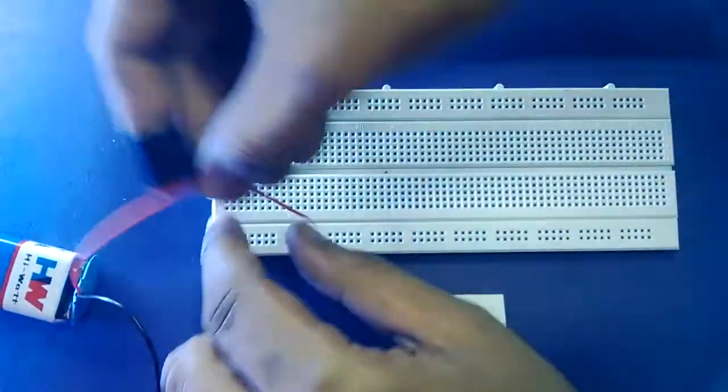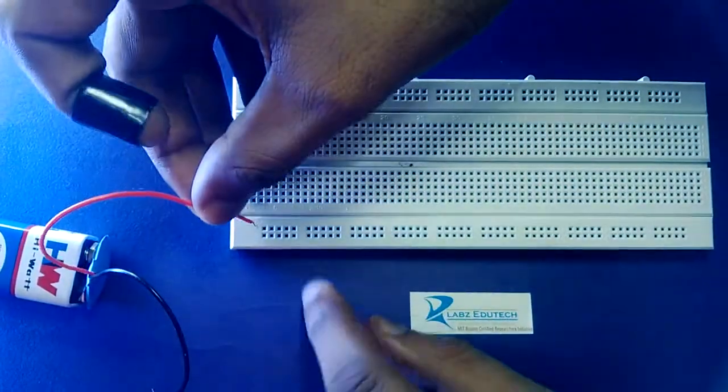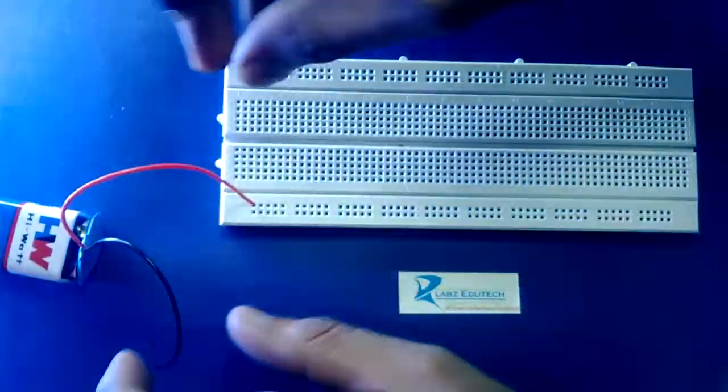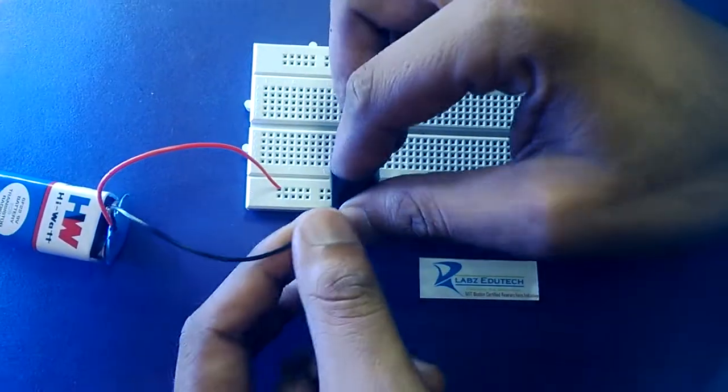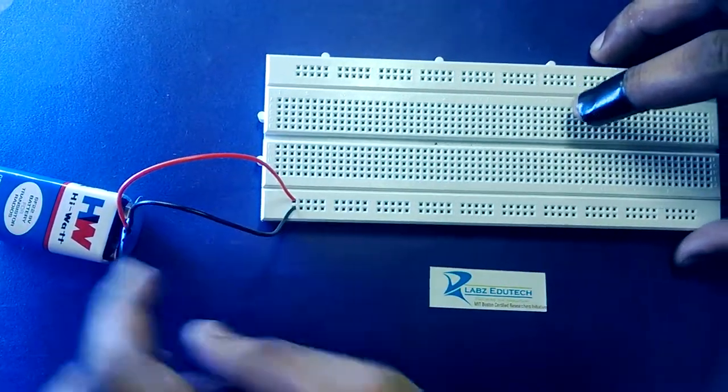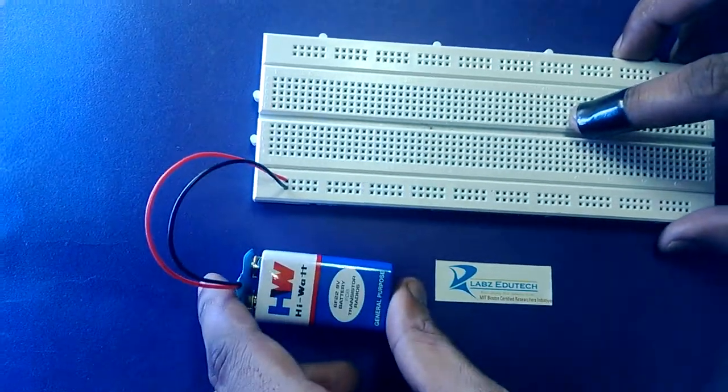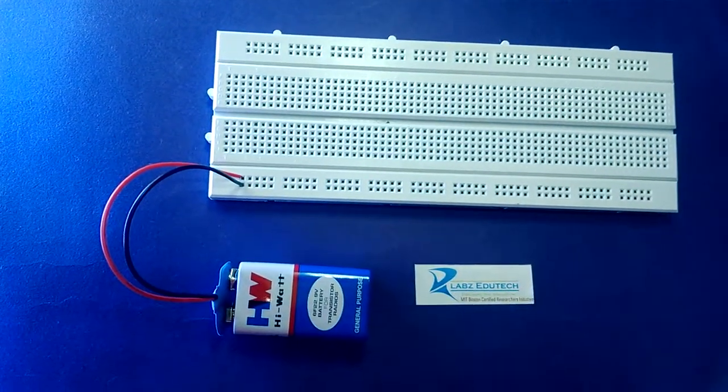So with the proceedings, this is the positive terminal of the battery. We are providing it on the upper lane and this is the negative terminal of the battery and we are providing this terminal in the bottom lane. So here completes the power section of the circuit.